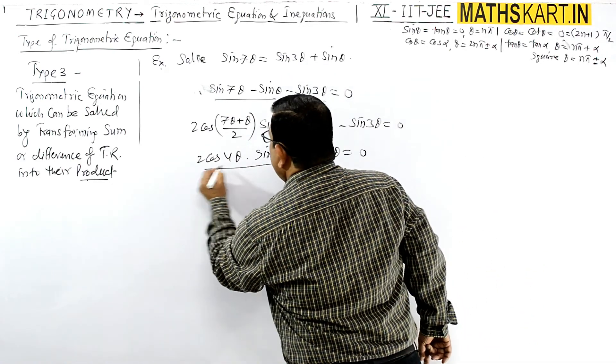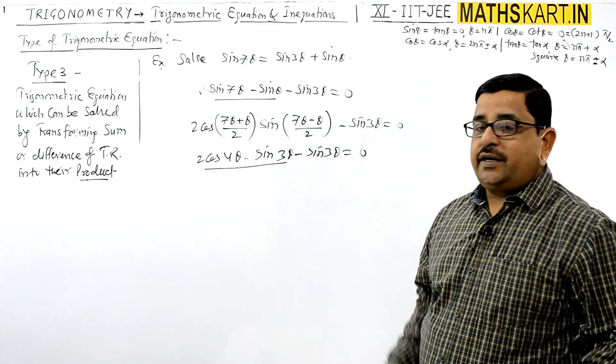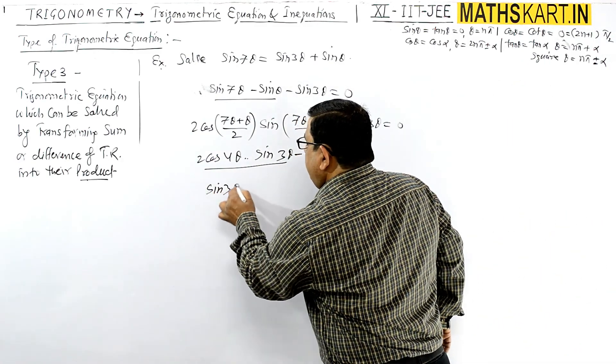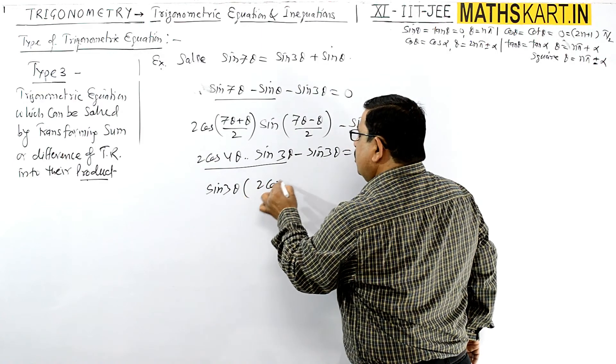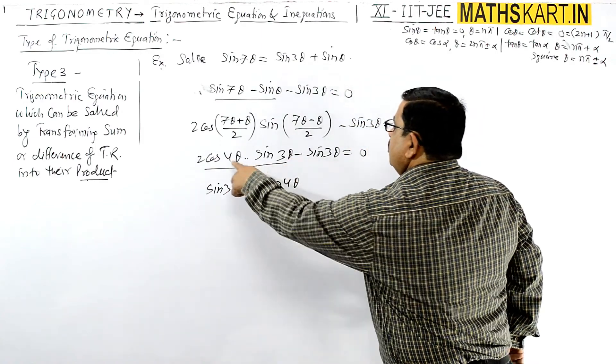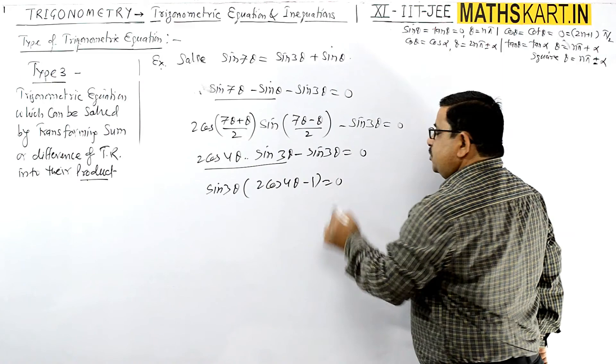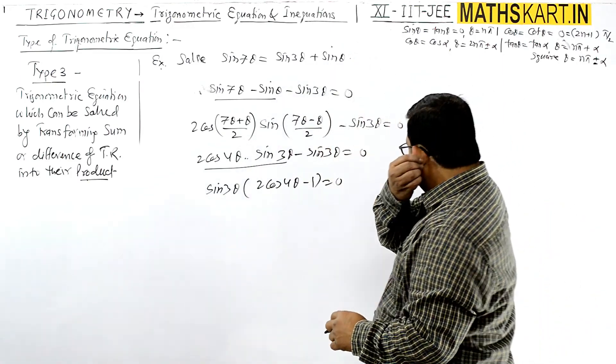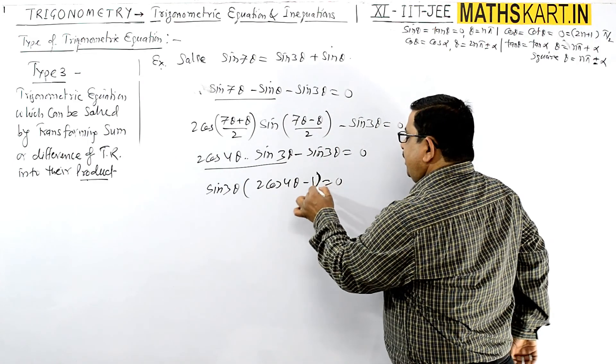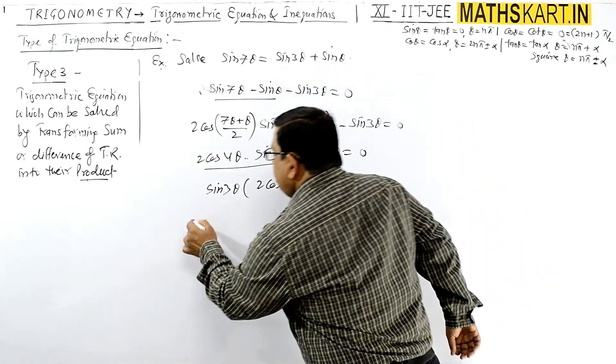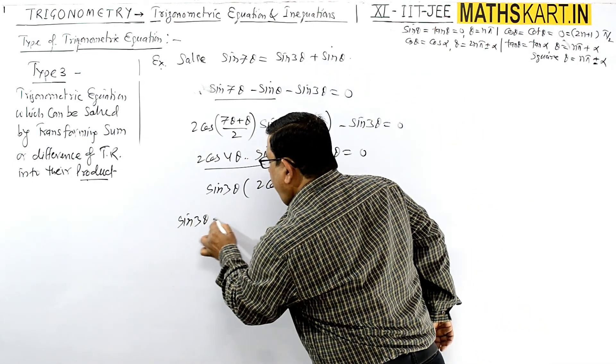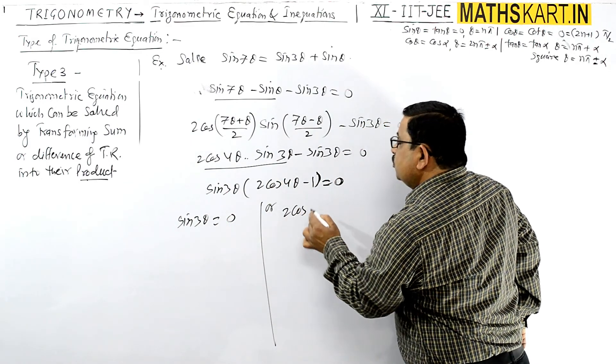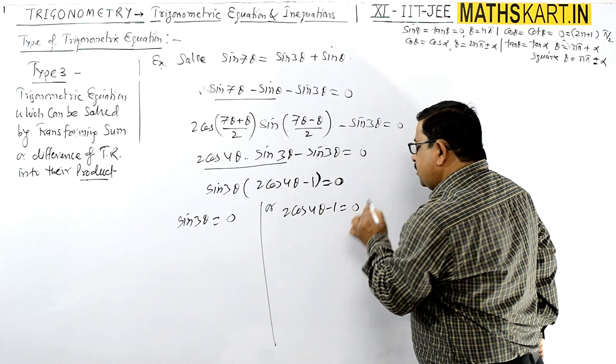Now these are in product form. You can take out sin 3θ common: sin 3θ(2 cos 4θ - 1) = 0. Now you have to write each factor equals to zero individually.